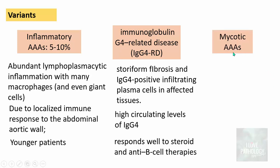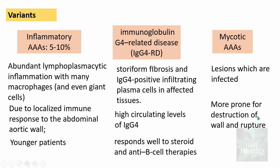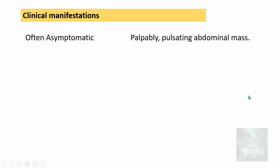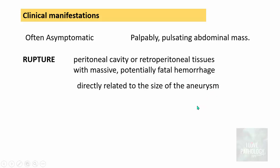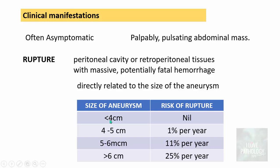The third variant is mycotic abdominal aortic aneurysms, where the lesions are infected, making them more prone for vessel wall destruction and rupture. Clinical manifestations: they are often asymptomatic but on palpation can be felt as a pulsating abdominal mass. The first major effect is rupture, usually into the peritoneal cavity or retroperitoneal tissues, with massive potentially fatal hemorrhage. The risk of rupture is directly related to size: less than 4 cm — negligible risk; 4 to 5 cm — 1% per year; 5 to 6 cm — 11% per year.